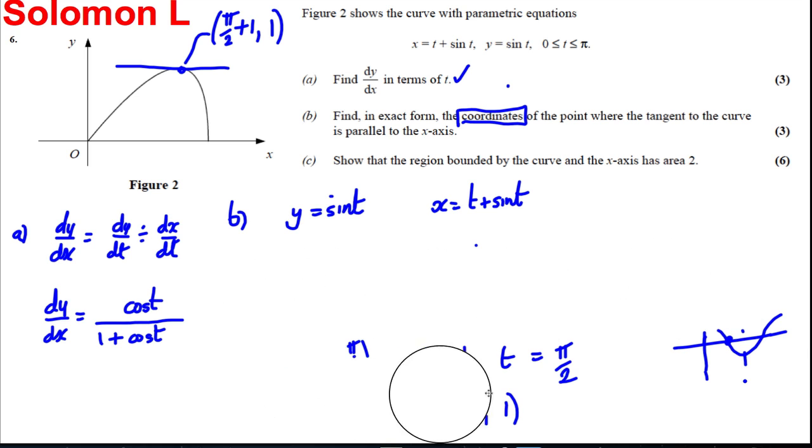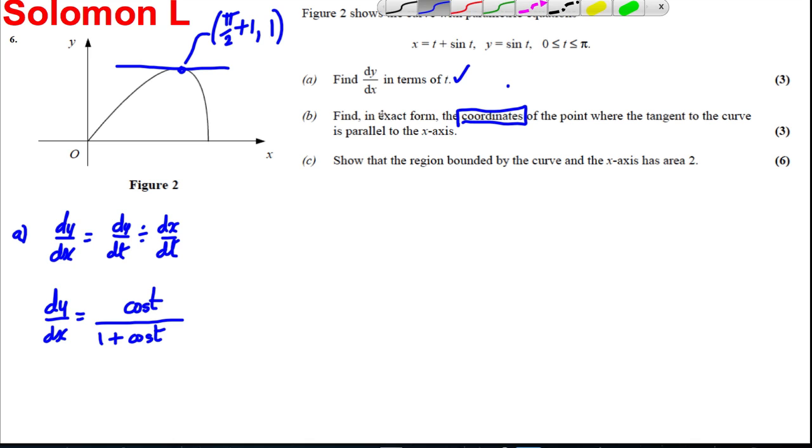Okay, so let's do part C lastly. We're asked to show that the region bounded by the curve in the x-axis has the following area 2. So we're using the formula, the area is the integral between that t value and that t value. So t1 to t2 of y in terms of t, obviously. And then dx by dt, dt.